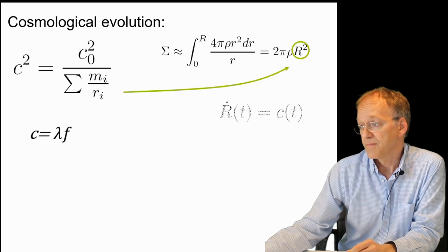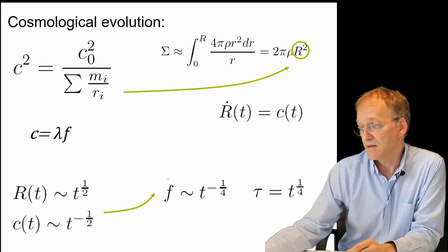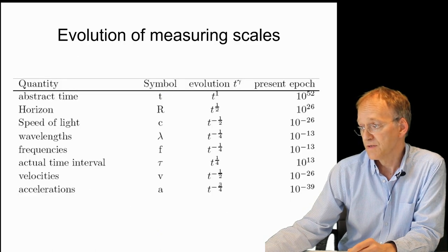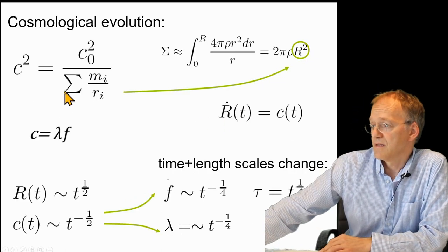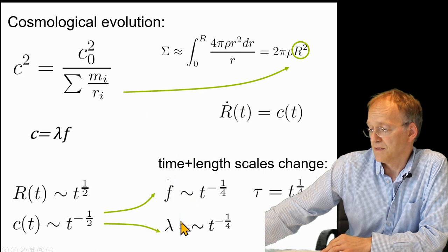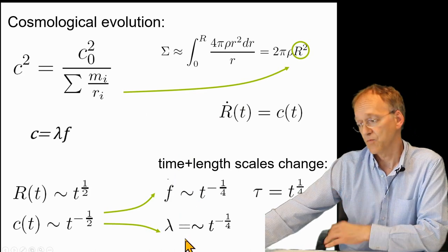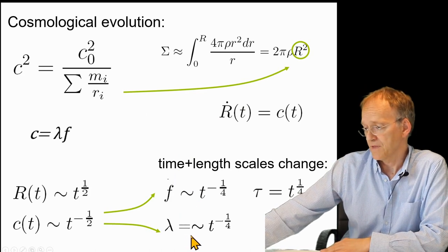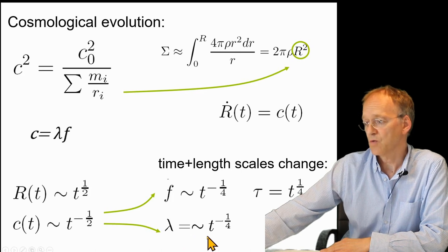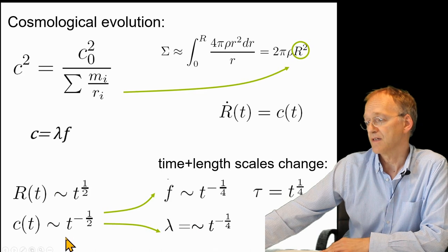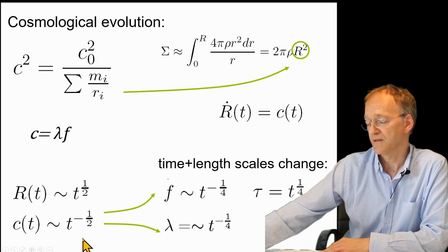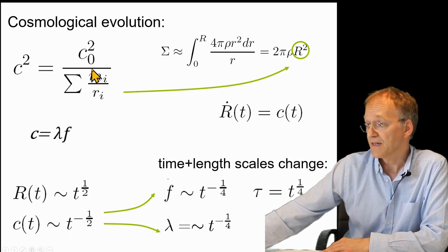Because if you look at the respective formulas, you see that the length scales, the wavelength of the atoms, atoms have to contract. Why? Because the speed of light decreases during the cosmological evolution.